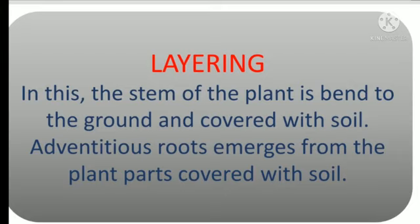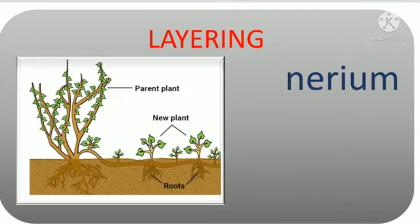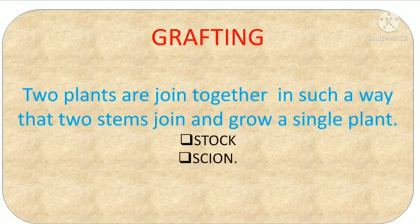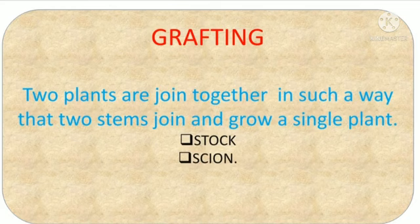In layering, the stem of the plant is bent to the ground and covered with soil. Adventitious roots emerge from the plant parts where it is covered with soil. An example of layering is the Nerium plant.